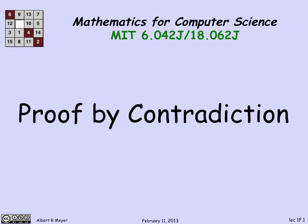It's doubtful if you really understand something if you can't explain why it's true. And that's what proofs are about in mathematics and in computer science. So we're going to be talking about proofs of lots of things that we're trying to understand. And in particular, we're going to look at a proof technique called proof by contradiction, which is probably so familiar that you never noticed you were using it. And now we're going to call explicit attention to it and think about it.